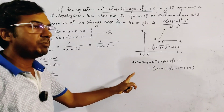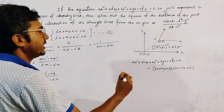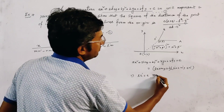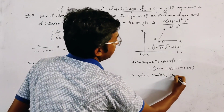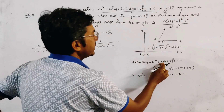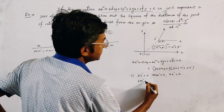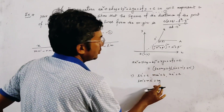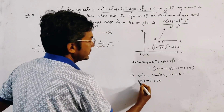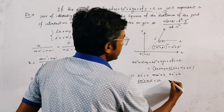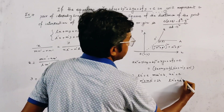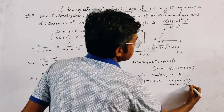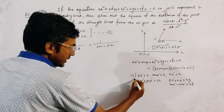Comparing the coefficients of equal powers of x and y, or the product of x and y, from both sides, we get: ll' = A, mm' = B, and nn' = C. Now comparing the coefficient of xy, we get lm' + l'm = 2H. And equating the coefficient of x, we get ln' + l'n = 2G, and mn' + m'n = 2F. We get all the relations by equating the coefficients.